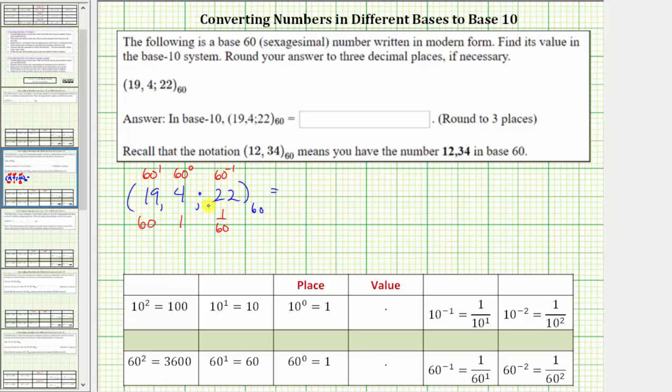And now to convert to base 10, we multiply the whole numbers by the place values, and then find the sum of the products. This is equal to 19 times 60 to the first plus 4 times 60 raised to the power of zero plus 22 times 60 raised to the power of negative one, which is equal to 19 times 60 plus 4 times 1 plus 22 times one-sixtieth. 19 times 60 equals 1,140 plus 4 times 1 is 4, plus 22 times one-sixtieth is 22-sixtieths.